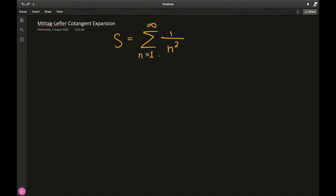Okay, so as always I have written the Basel problem down. The series infinite sum we need to evaluate: sum from n equals 1 to infinity of 1 over n squared. Now I am slightly going to take a detour and remind you of a result we proved earlier, the Mittag-Leffler cotangent expansion.